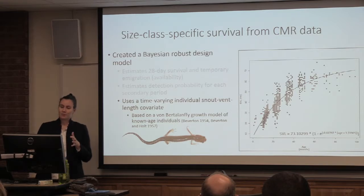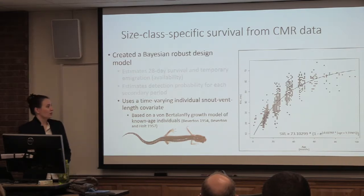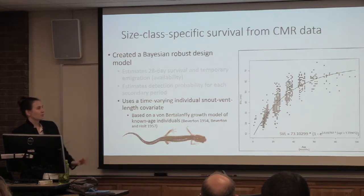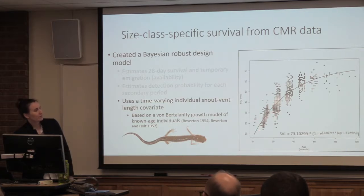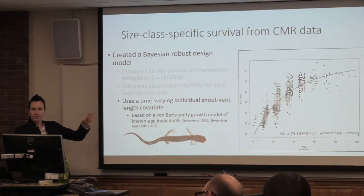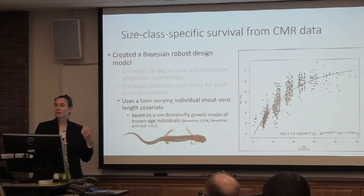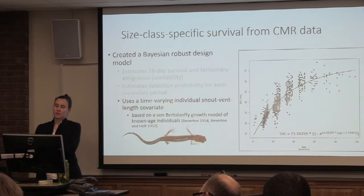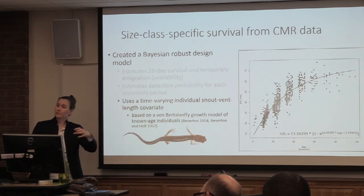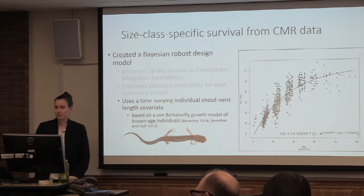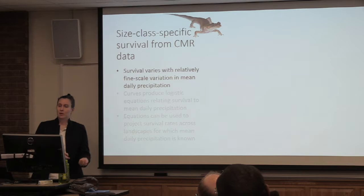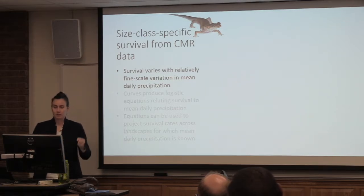We created a von Bertalanffy growth model of known-age individuals, which allowed us to say that an animal that's about 20 months old is going to be somewhere in this band of snout-vent length measurements. You can see nice breakpoints where animals of about that age are in a certain range of sizes. From that, even if we didn't capture an animal, we know its size at the last capture and how many months have passed, so we can estimate what it probably measures now — filling in these blanks artificially. That's what allowed us to use this Bayesian model to estimate these size-specific survival rates.